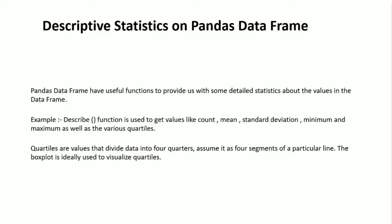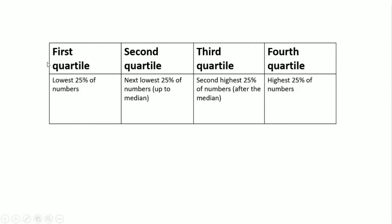The first quartile contains the lowest 25% of numbers. The second quartile contains the next lowest 25% of numbers up to the median value, where the median is the middle value. The third quartile contains the second highest 25% of numbers, and the fourth quartile contains the highest 25% of numbers.